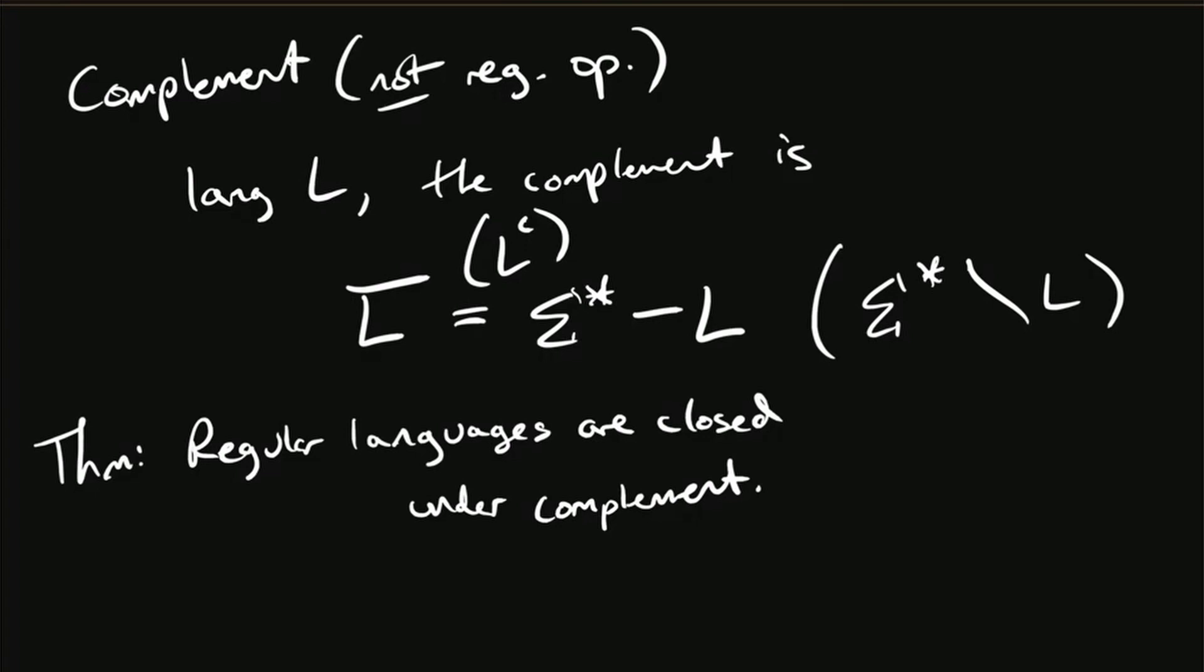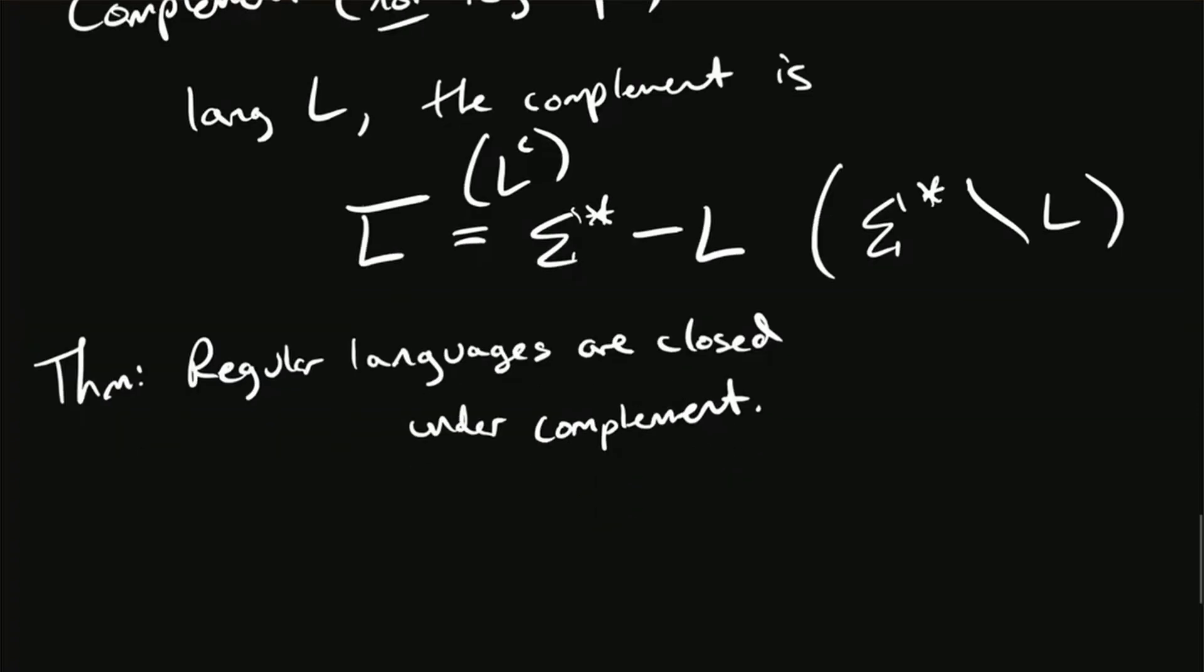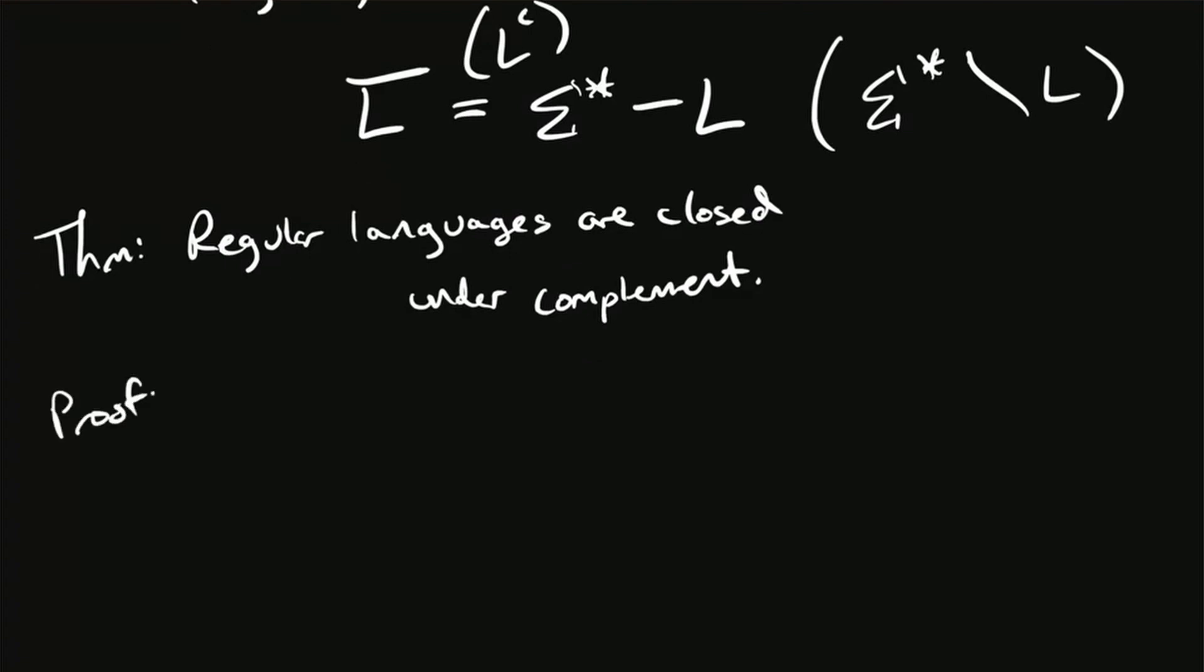So can anyone tell me informally what this is stating? Right. So if I take any old regular language that you want, form the complement of it, the resulting language is also regular. It can never be not regular. How in the world are we going to prove that?